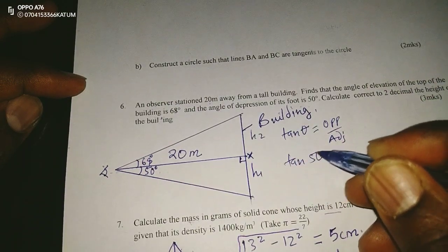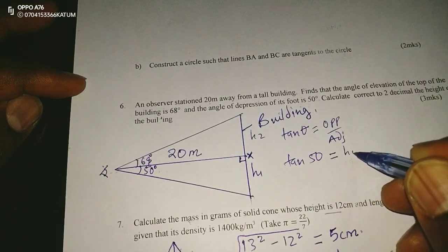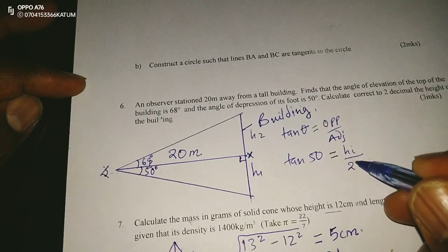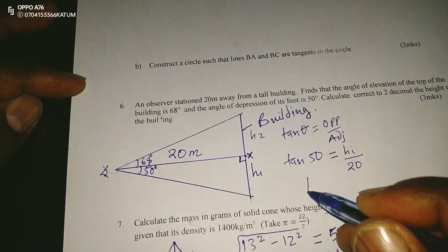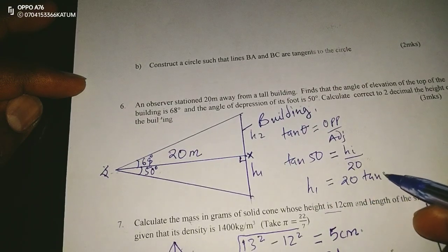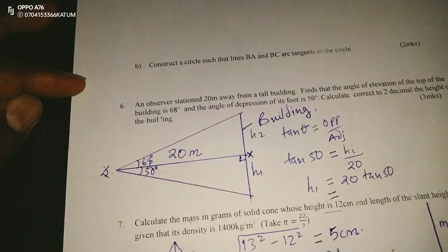So, the tangent of 50 degrees is given by the opposite length, that is H1, divided by the adjacent length, that is 20. So, for us to get H1, we need 20 tan 50. So, let me compute this. 20 tan 50.